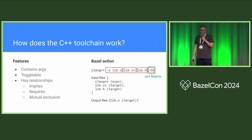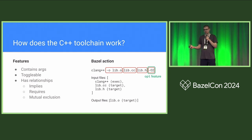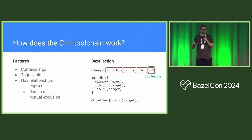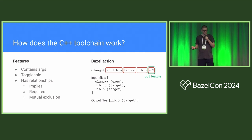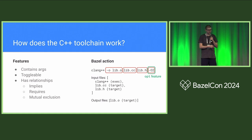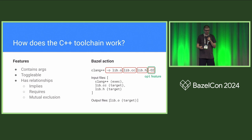Next we have features. Args are unconditionally added to the command line. Features are conditional — they contain args and they're toggleable, so this is how we can do things under certain conditions. In this particular case, we have the opt feature. Bazel will provide it for you when you're doing optimized compilation, and we're going to add -O2 to the command line. Features can have relationships: implies, requires, mutual exclusion. That sort of stuff was already there in the old toolchain.